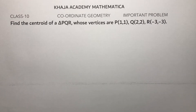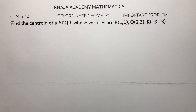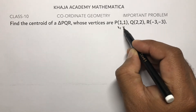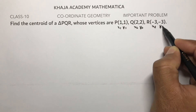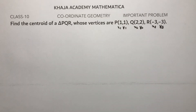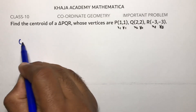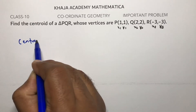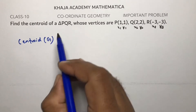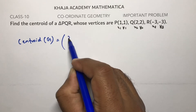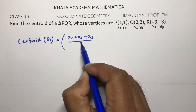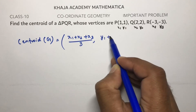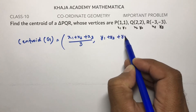Find the centroid of a triangle PQR with vertices (1,2), (2,-3), and (3,?). We consider these as x1,y1 and x2,y2 and x3,y3. The centroid, denoted by G, is given by the formula: G = ((x1+x2+x3)/3, (y1+y2+y3)/3).